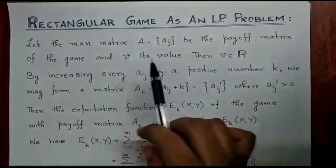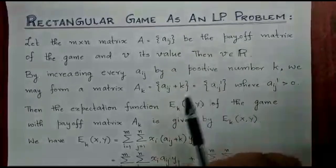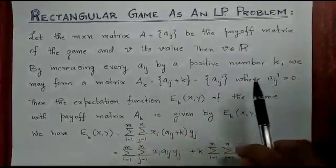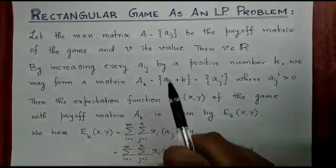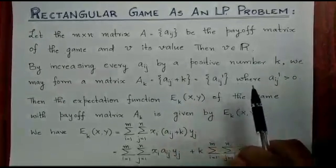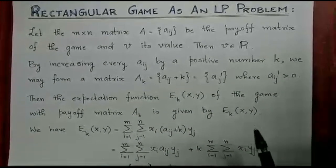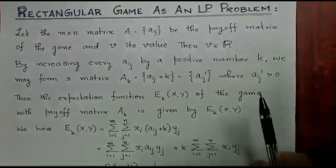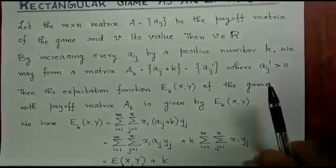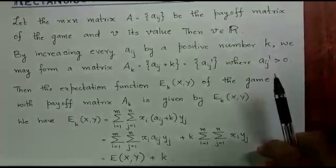Let V be its value. V being a value of a payoff matrix is of course a real number. Now, by increasing every Aij by a positive number K, we may form a matrix AK — that is, by increasing each Aij entry by K. We denote it by Aij dash where Aij dash is greater than 0. This is always possible because given any M by N matrix, there are only M into N entries. So we can find a positive number K such that adding K to each entry makes the whole matrix positive, that is each entry strictly greater than 0.